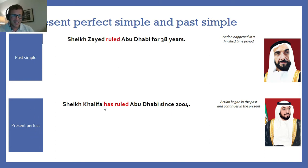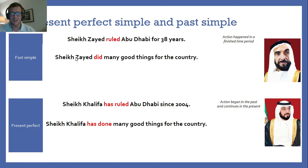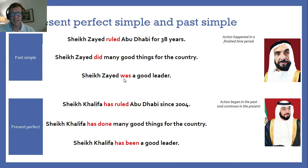Sheikh Khalifa has ruled — it began in the past in 2004 and it continues in the present. He is still the president of the country and the ruler of Abu Dhabi. This is the difference between past simple and present perfect. They look similar but the 'has' makes a big difference. Sheikh Zayed did many good things for the country — it's finished. Sheikh Khalifa has done many good things for the country, which means he is still doing good things. Sheikh Zayed was a good leader. Sheikh Khalifa has been a good leader — we're still talking about him in the present.